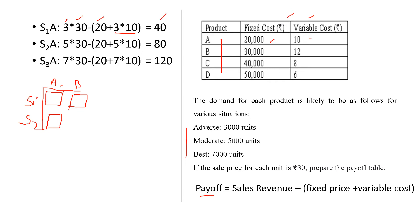Then, S2, A. Here, the moderate situation is happening. So, 5,000 units. That is 5 into 30 minus 20. That is the same fixed price. So, 20 plus 5 into 10, and that is 80.